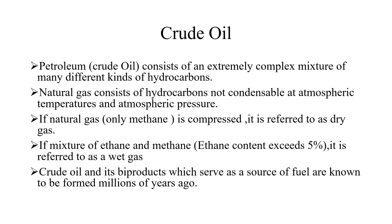Now we talk about crude oil and the gaseous part — natural gas. Crude oil is petroleum; it consists of an extremely complex mixture of many different kinds of hydrocarbons. Natural gas consists of hydrocarbons that are not condensable — it remains in gaseous form at atmospheric temperatures and pressure. If only methane is compressed, it is referred to as dry gas. If the mixture contains ethane and the ethane content exceeds 5%, it is referred to as wet gas.